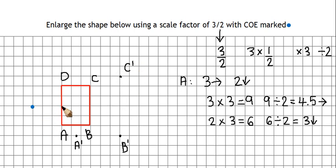And D is 3 right, 2 up. So that's going to become 4 and a half right, and 3 up.